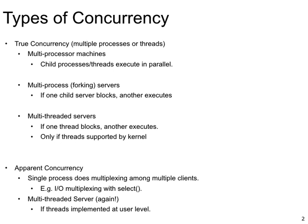We begin with a discussion of various types of concurrency. There are primarily two types of concurrency: true concurrency and apparent concurrency. In true concurrency, you have either multiple processes or several kernel level threads, and these threads or processes can make progress independently of each other. These are essentially independent flows of execution whose scheduling is controlled by the operating system kernel.